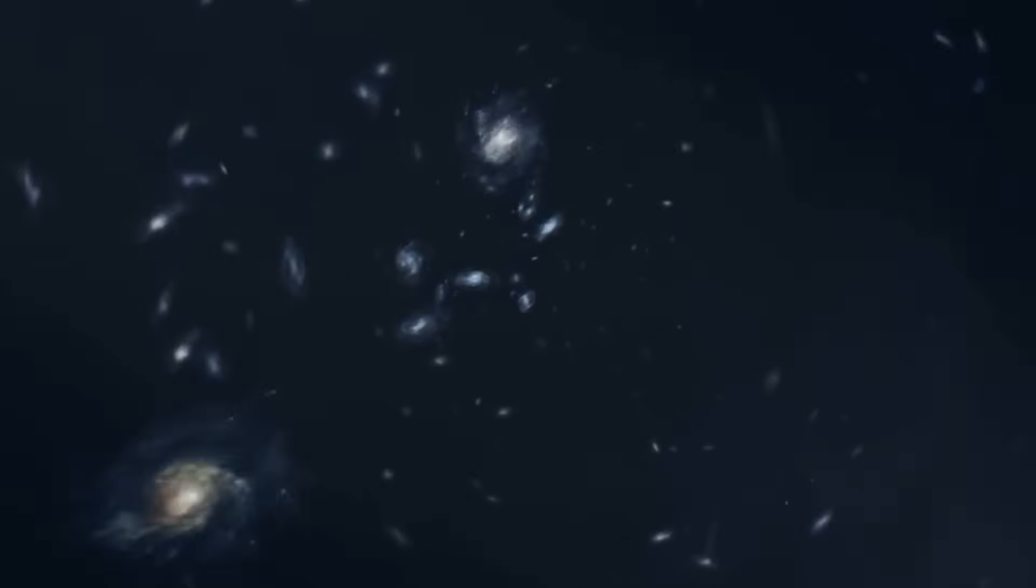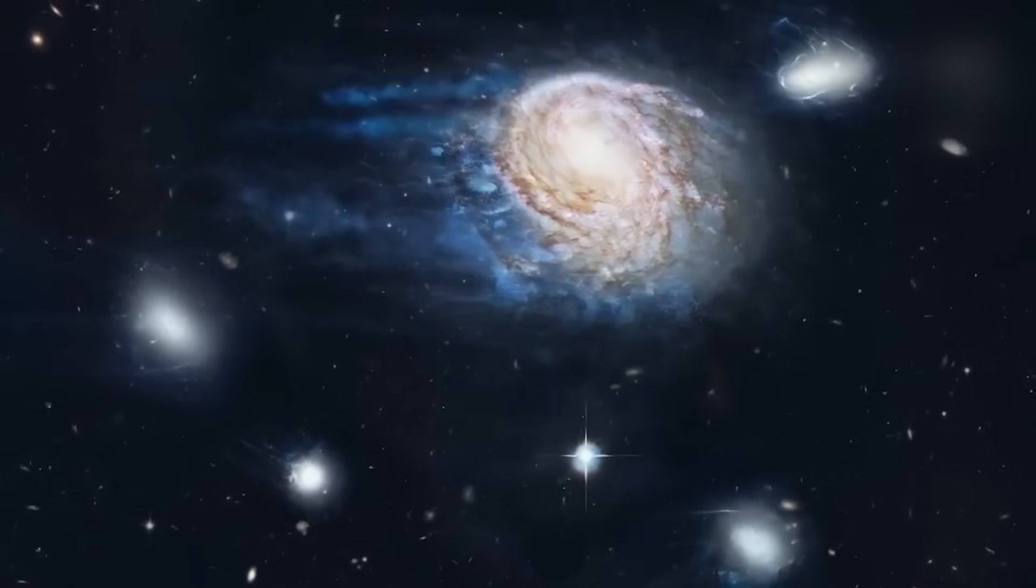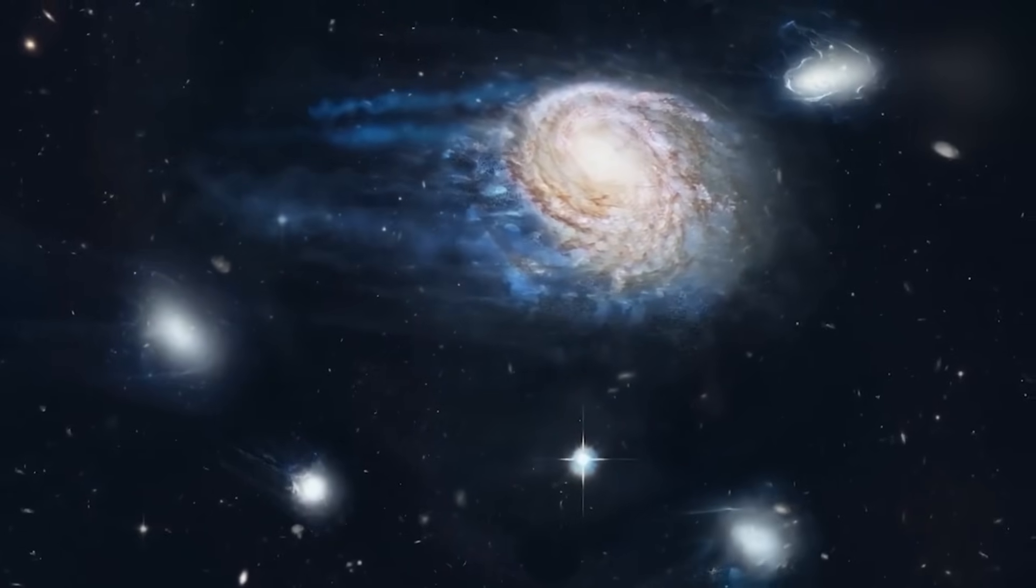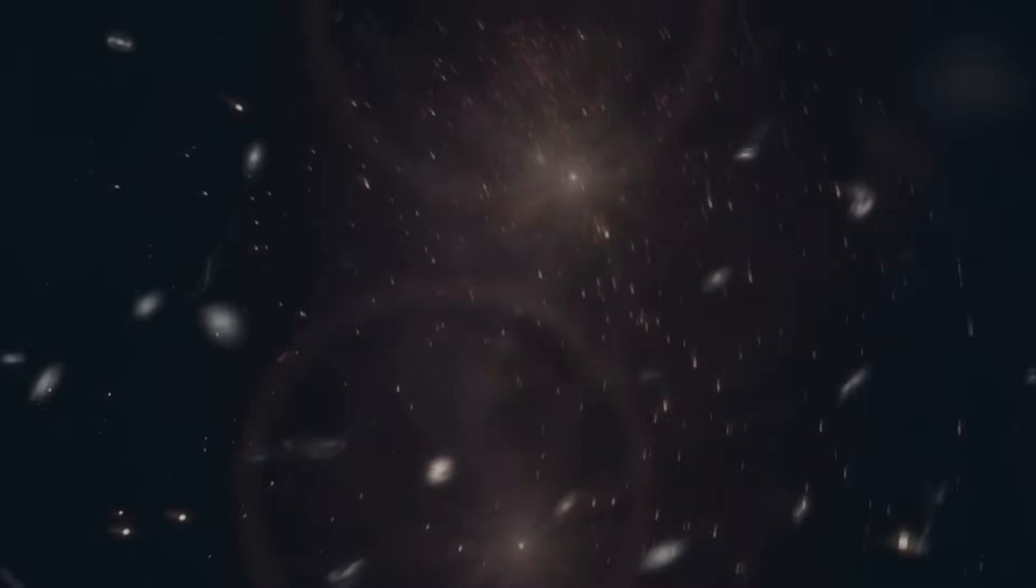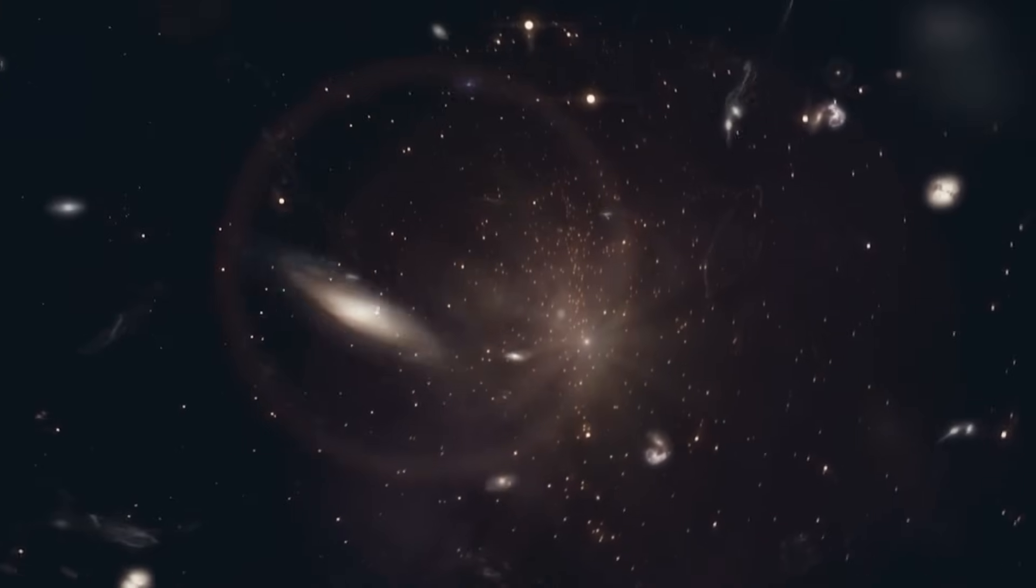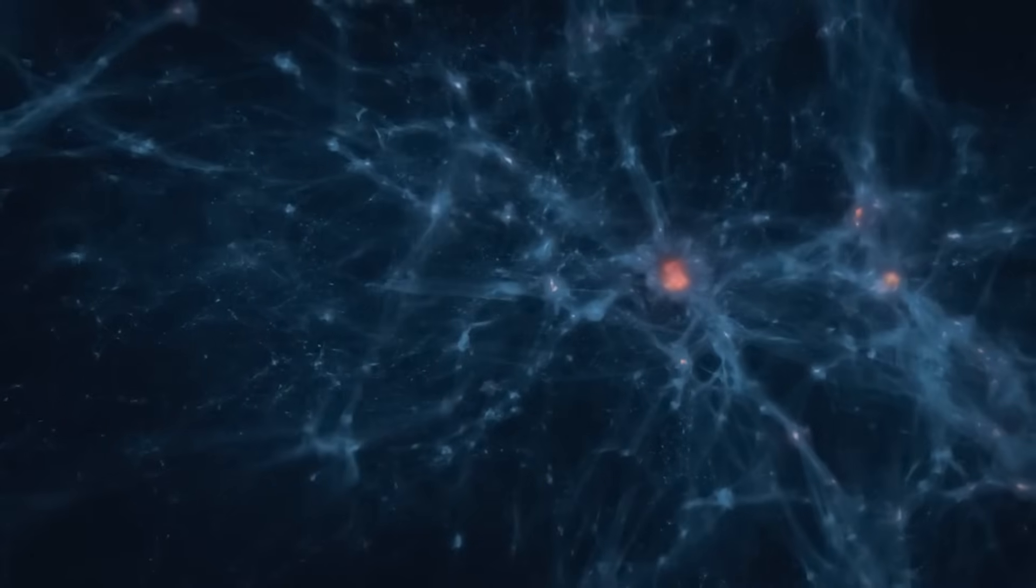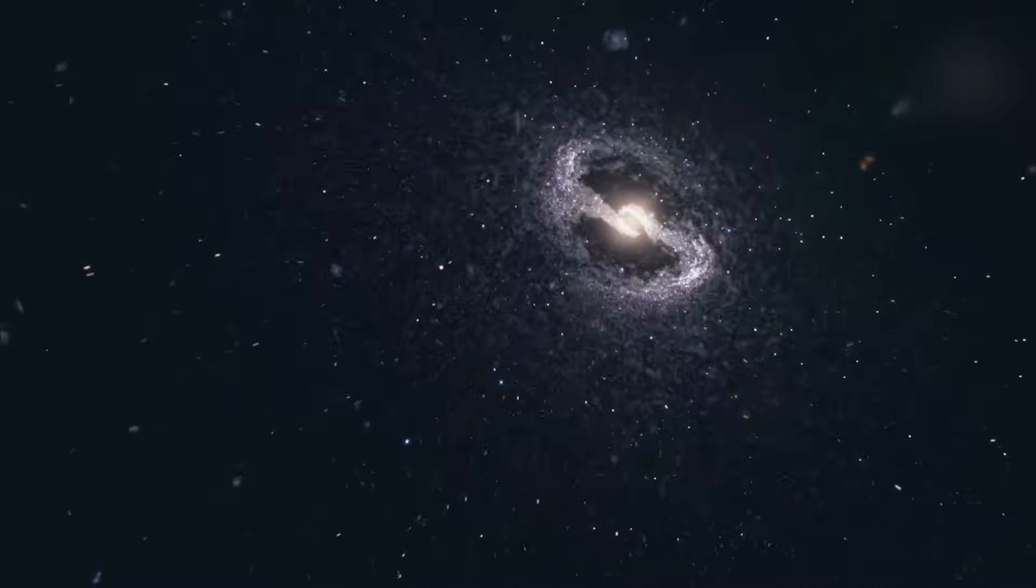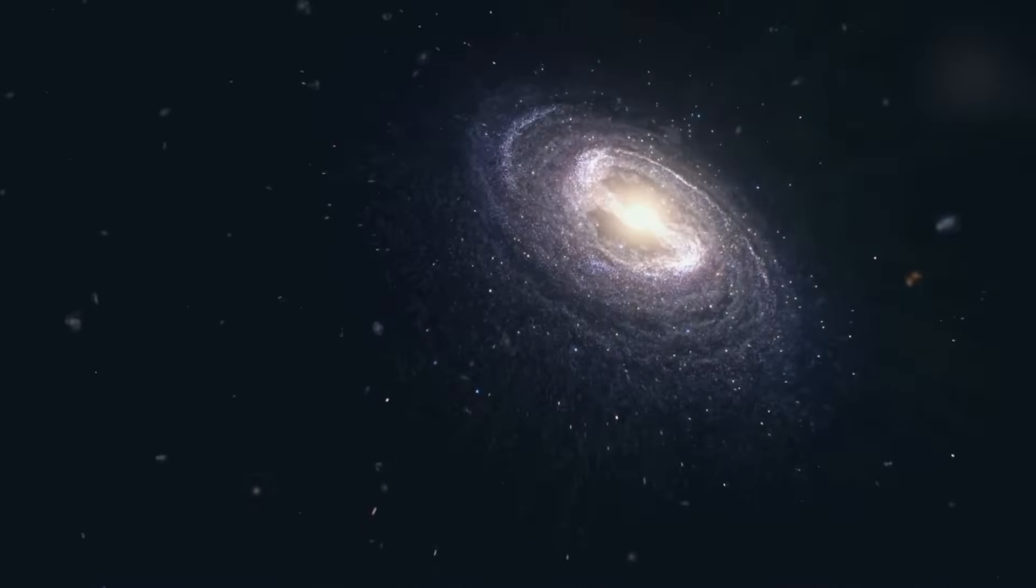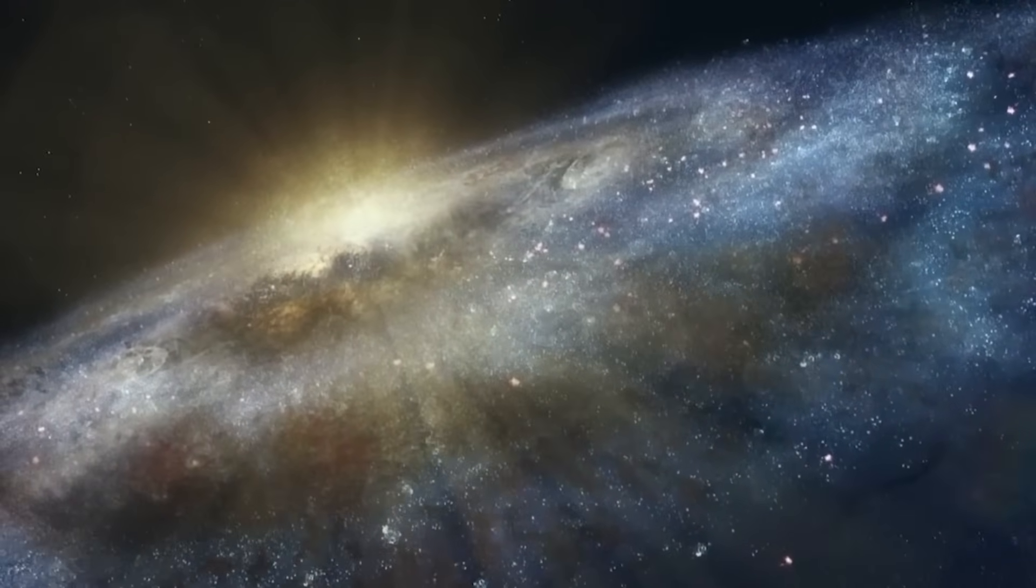The galaxies our astronomers studied weren't the immediate offspring of the Big Bang. Instead, they emerged during a span that began a billion years afterward and stretched on for several billion more. It's a period that's not as frequently discussed as the Big Bang itself, but is equally riveting. It's during this epoch that the universe transitioned from a homogeneous soup of particles to a more structured space where galaxies began to take shape. These were the universe's formative years, a period of astronomical adolescence, if you will.